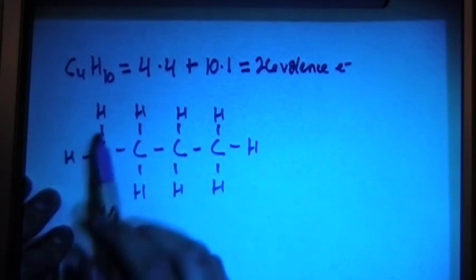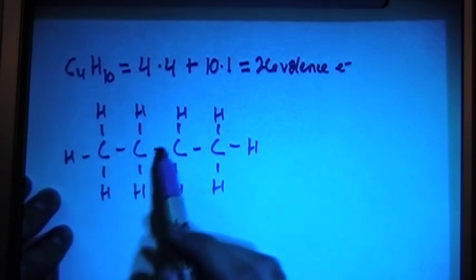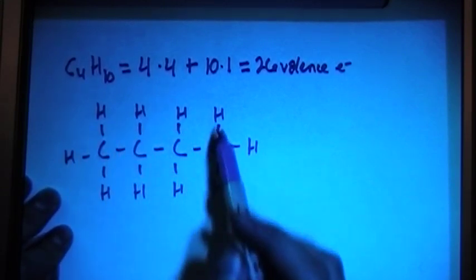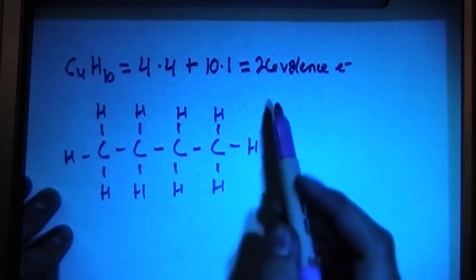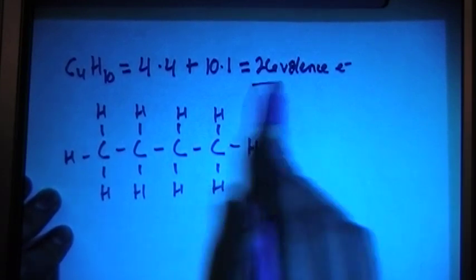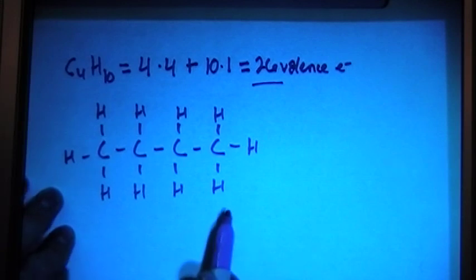So we have one, two, three, four, five, six, seven, eight, nine, ten, eleven, twelve, thirteen bonds. Each bond is two electrons, so that's 26 electrons, so this is actually the correct shape.